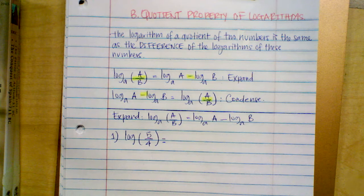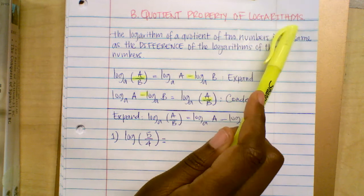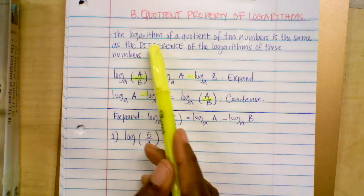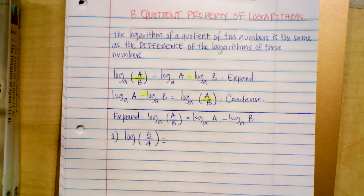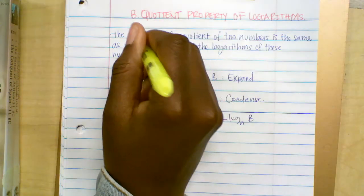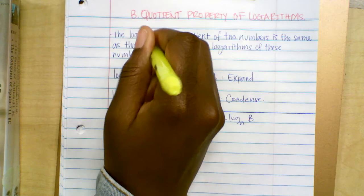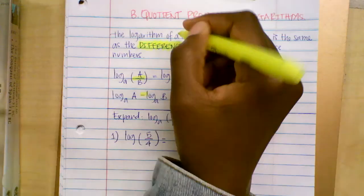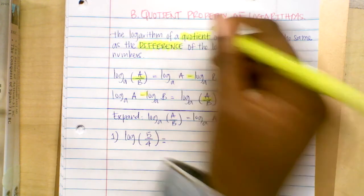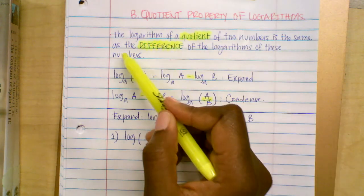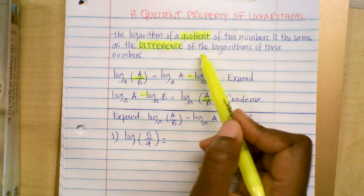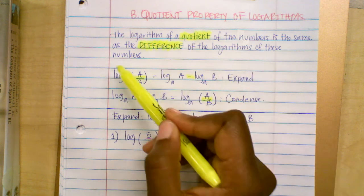In this video, I'm going to teach you how to apply the quotient property of logarithms. The logarithm of a quotient of two numbers is the same as the difference of the logarithms of those numbers.